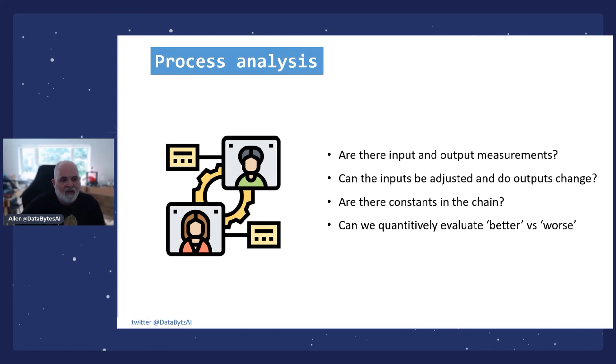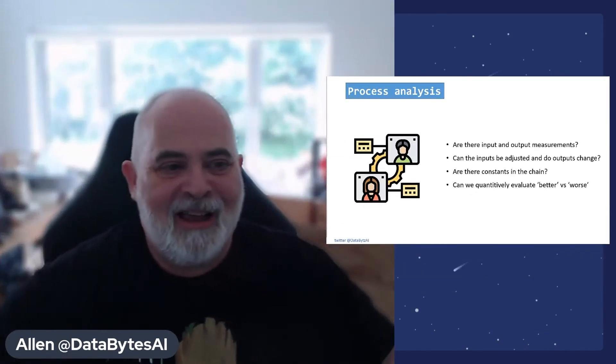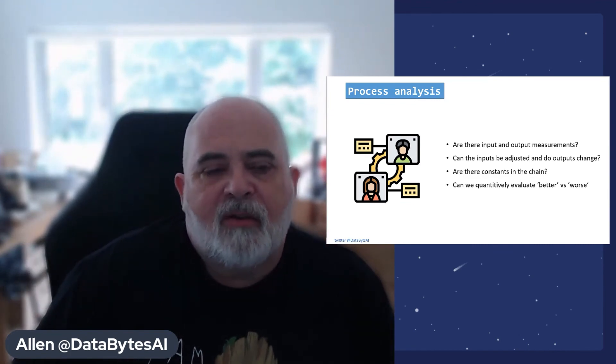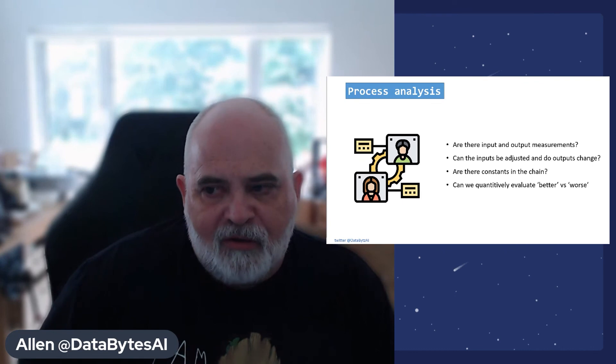Are there constants in the chain? Are there things that don't change? Well, there are. So in our car, there's me in the car. There's the maximum speed the car can go. There's how much fuel I have left. It might be a variable, but there's a maximum amount that I can carry. And can we quantitatively evaluate better or worse? Well, for my car example, I suppose I can say, better is I get from A to B safely and worse is I don't and I get injured or worst case scenario, I die.